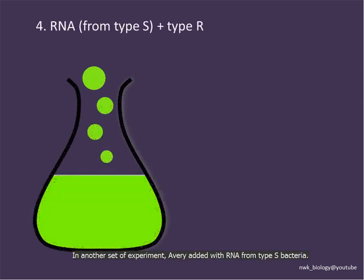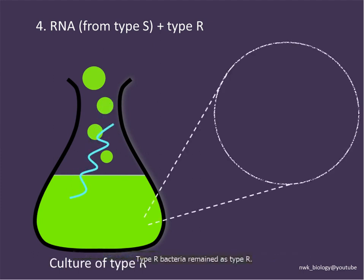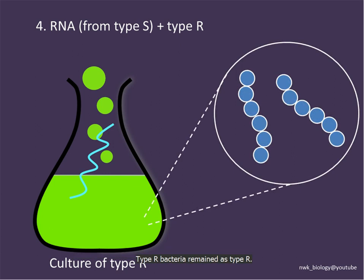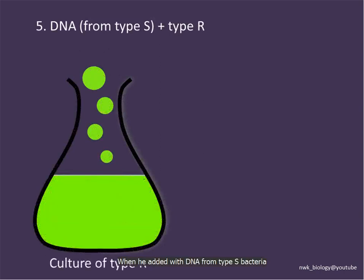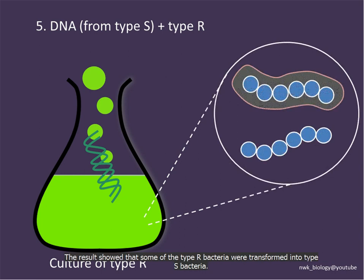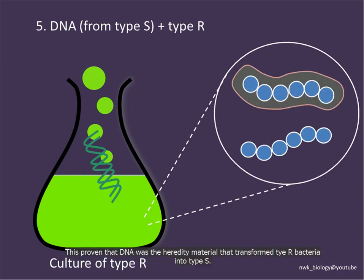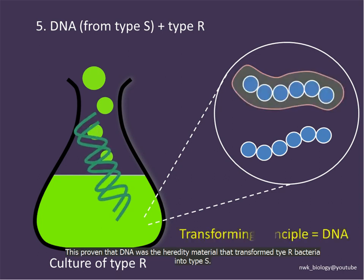In another set of experiments, Avery added RNA from type S bacteria, but the type R bacteria remained as type R. However, when he added DNA from type S bacteria, some of the type R bacteria successfully transformed into type S bacteria. This proved that DNA is the hereditary material that transformed type R bacteria into type S. The discovery of Avery showed that the transforming principle is DNA.